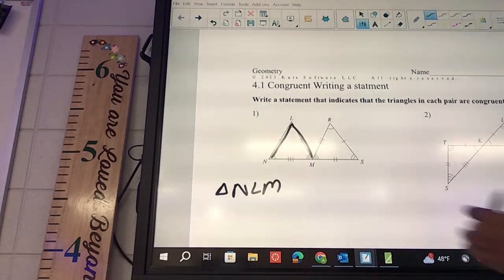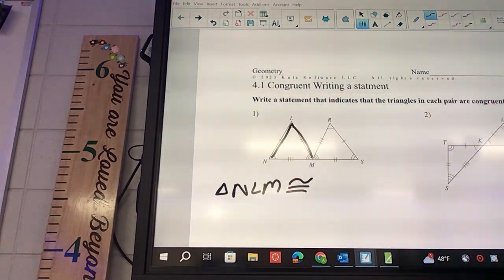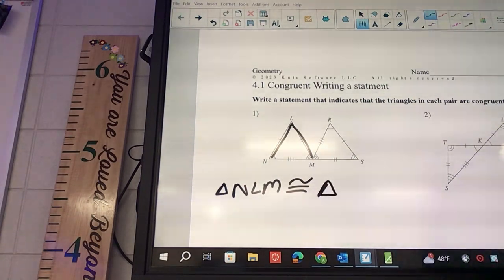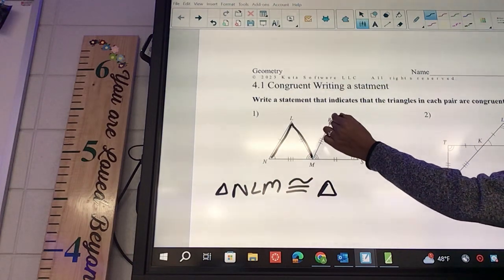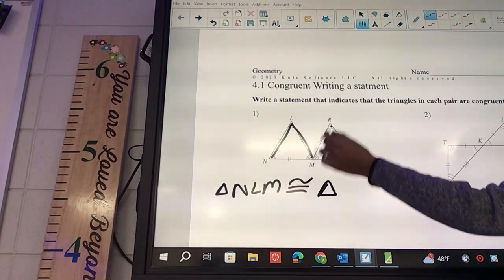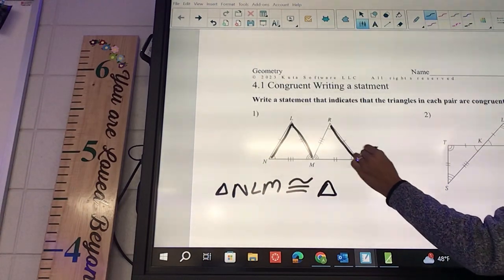And then it's going to say is congruent to. So we do an equal sign with a little squirrely on top. Triangle - you need another one. And then again on this one we're going to start at angle one, so one to two - which one is two, M or S? S. So RSM.